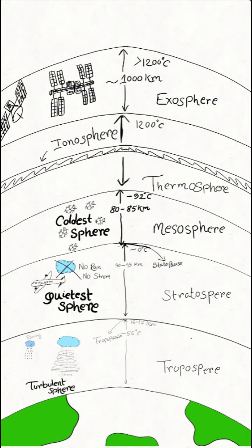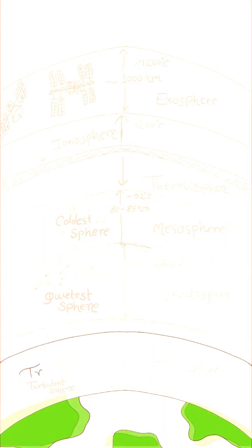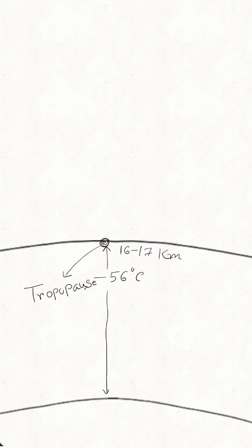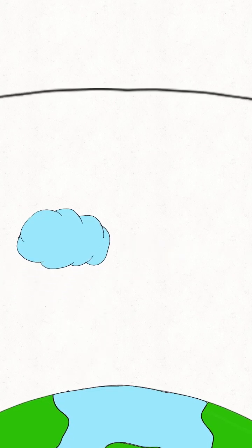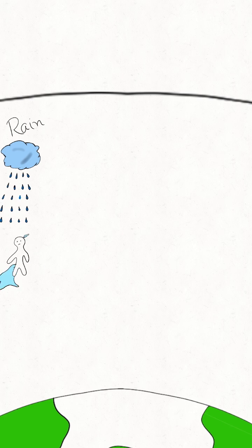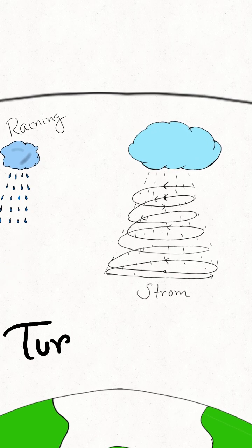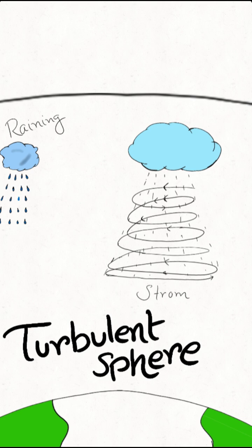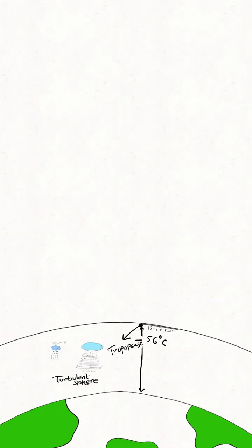Some important levels of our atmosphere. First one is the troposphere, which is situated 16 to 17 kilometers away from sea level, and the lowest temperature is minus 56 degrees Celsius. Due to the convection current, raining and storming takes place here. That's why it is known as the turbulent sphere. The next one is the stratosphere, which is situated 40 to 45 kilometers away from the sea level.